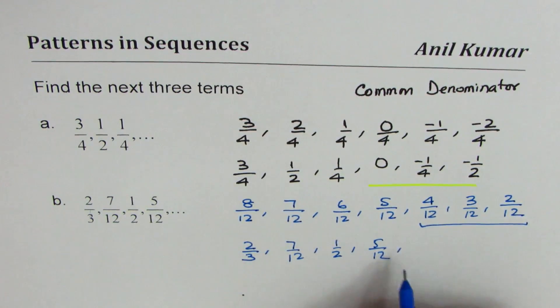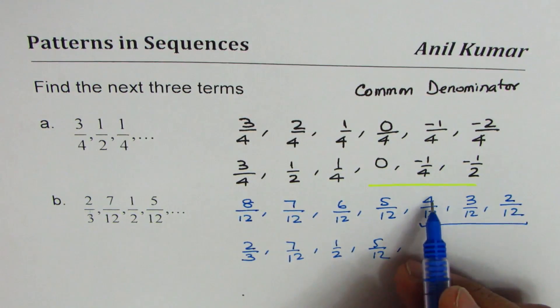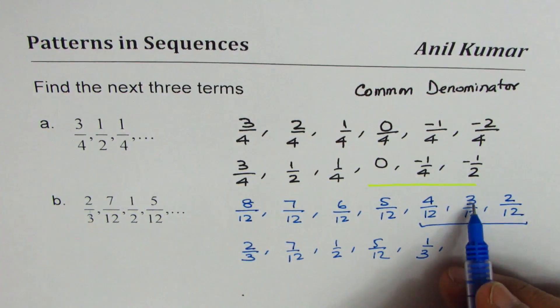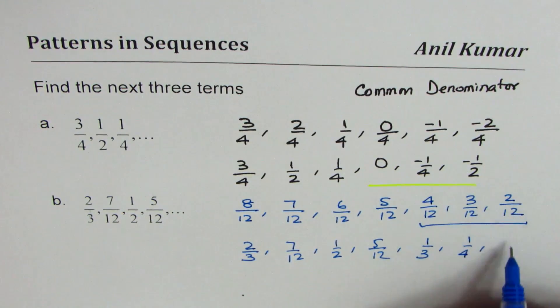Now 4/12, dividing both by 4, you get 1/3. Divide by 3, you get 1/4. Divided by 2, you get 1/6.